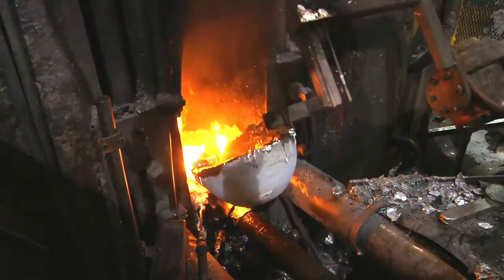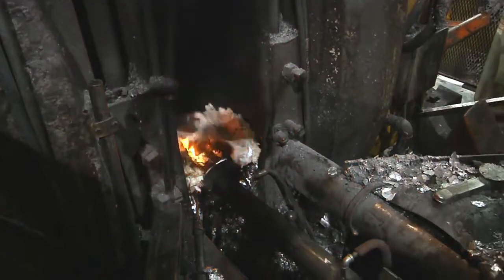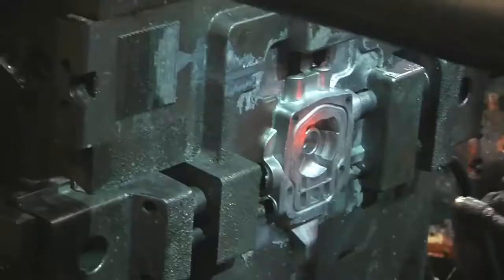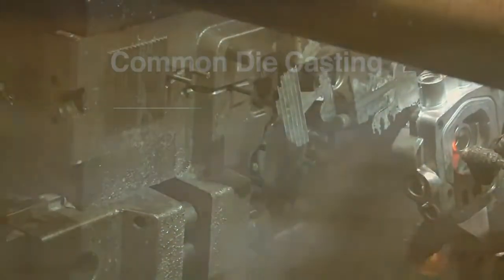Next, pre-measured amounts of molten metal are injected into the dies at extremely high pressures. The newly formed part is then removed from the dies and the cycle is repeated after the dies close.